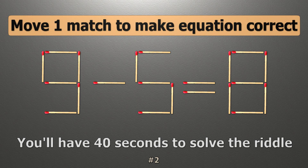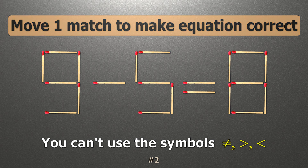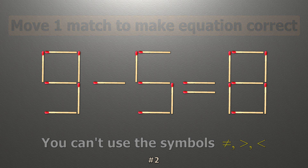We have the equality 9 minus 5 equals 8. Our equality is wrong. We need to move one match to make our equality correct.